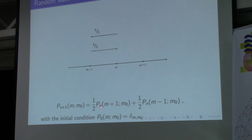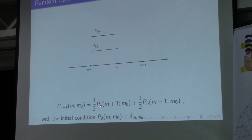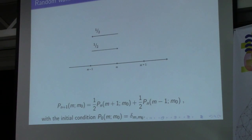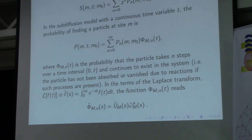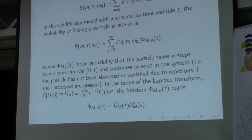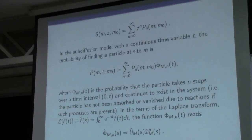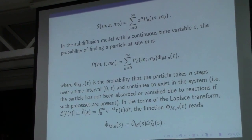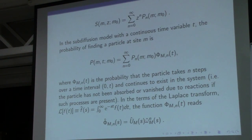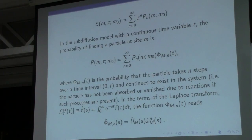P denotes the probability; N, the number of jumps; n, the discrete spatial sites; and N₀ is the initial position of the particle. We are interested in finding the probability for continuous variables, and after solving this equation, we have to pass from discrete to continuous variables.